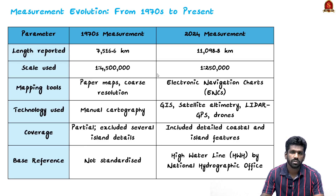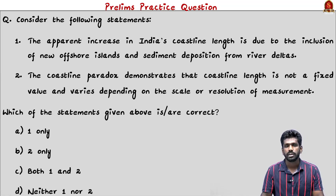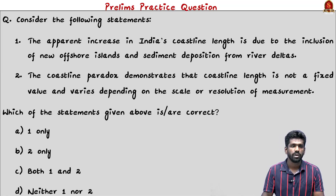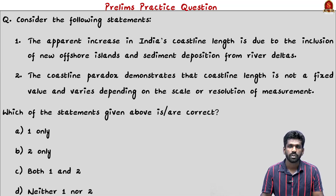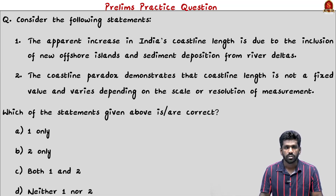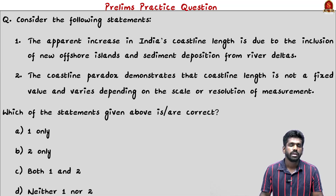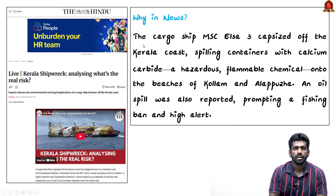The coastline is now measured with greater accuracy using advanced technology and better maps. For the prelims practice question: the apparent increase in India's coastline length is NOT due to inclusion of new offshore islands or sediment deposition. The coastline paradox demonstrates that coastline length is not a fixed value and varies depending on the scale or resolution of measurement. The correct answer is option B — statement 2 only.